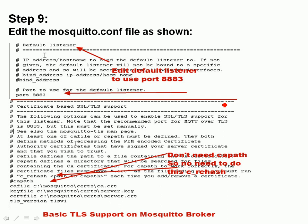Now we edit the Mosquitto configuration file and add another listener with these entries: the CA file, the key file, and the cert file. I've set the TLS version here, though that is the default. A quick note: there's nothing else in this configuration file. A common issue I've seen is people trying to configure SSL and username/password authentication at the same time. I recommend doing one thing at a time — configure SSL first, get it working, then add usernames and passwords, and then combine them into one configuration file.